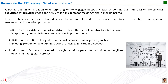Production is a process of combining various material inputs and immaterial inputs in order to make something for consumption, which is the output. It is the act of creating output — a good or tangible product, or an intangible service — which has value and contributes to the utility of individuals. A production function relates the inputs of factors of production to the output of goods. In the basic production function, inputs are typically capital and labor, though more complex functions may include other variables such as land or natural resources.